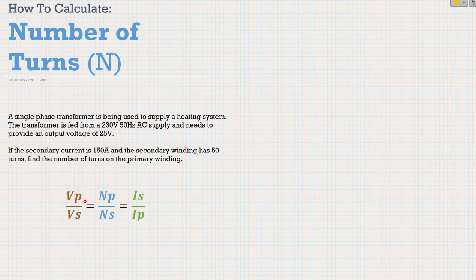So straight away, we've got two values there: voltage primary and voltage secondary. Right, so if the secondary current is 150 amps and the secondary winding has 50 turns, find the number of turns on the primary winding.